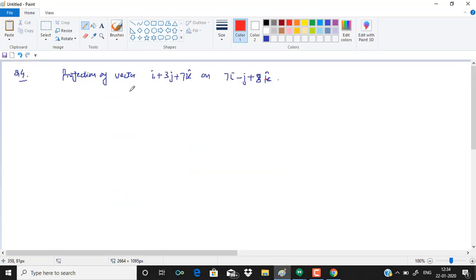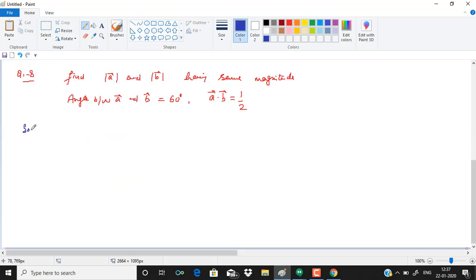In question number 4, we have projection of vector i plus 3j plus 7k on this vector. There is a formula: projection of vector a on b is a dot b upon magnitude of b. So a dot b will give 7 minus 3 plus 56, that is 60 over under root of 49 plus 1 plus 64, which is under root 114.